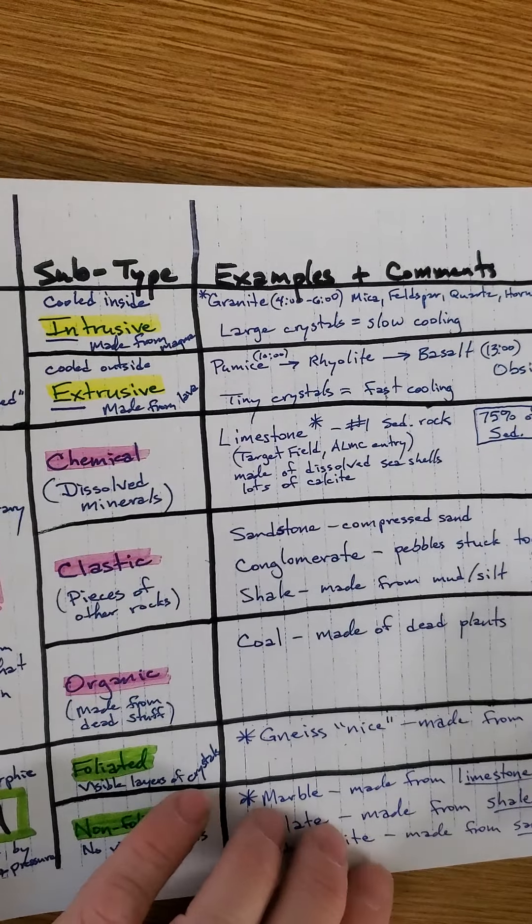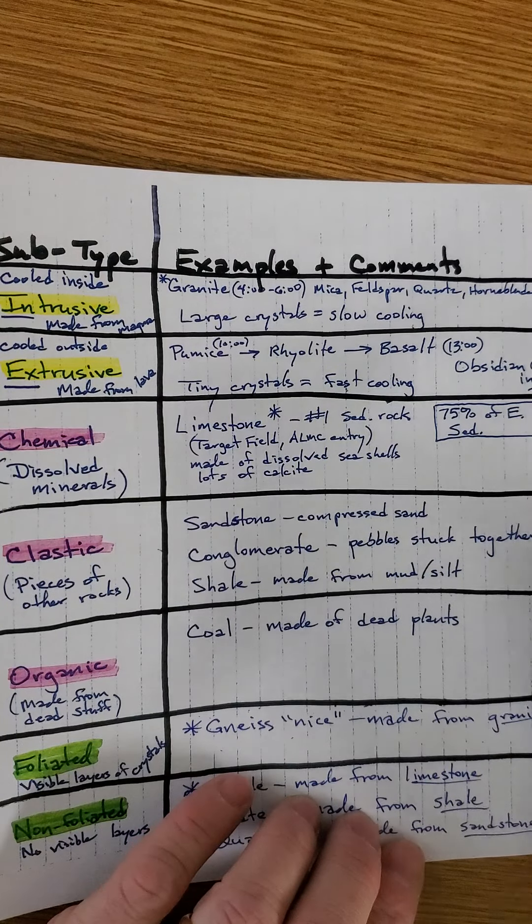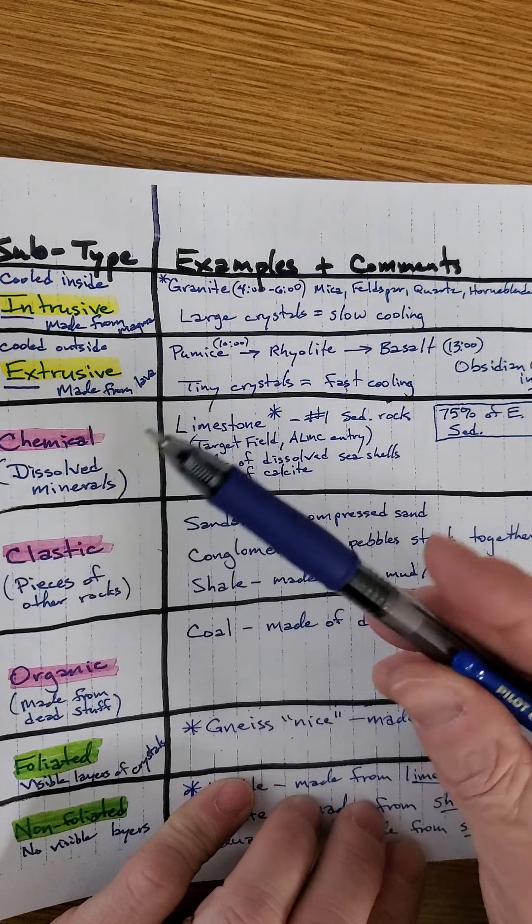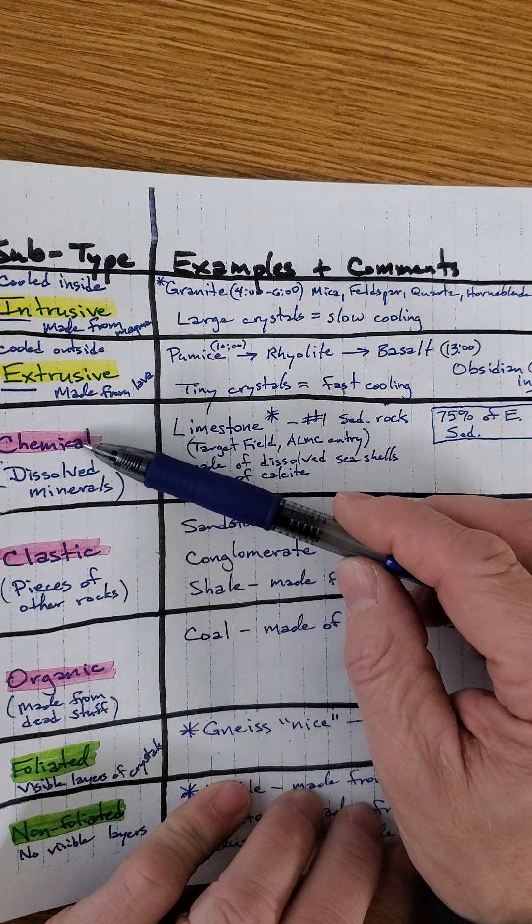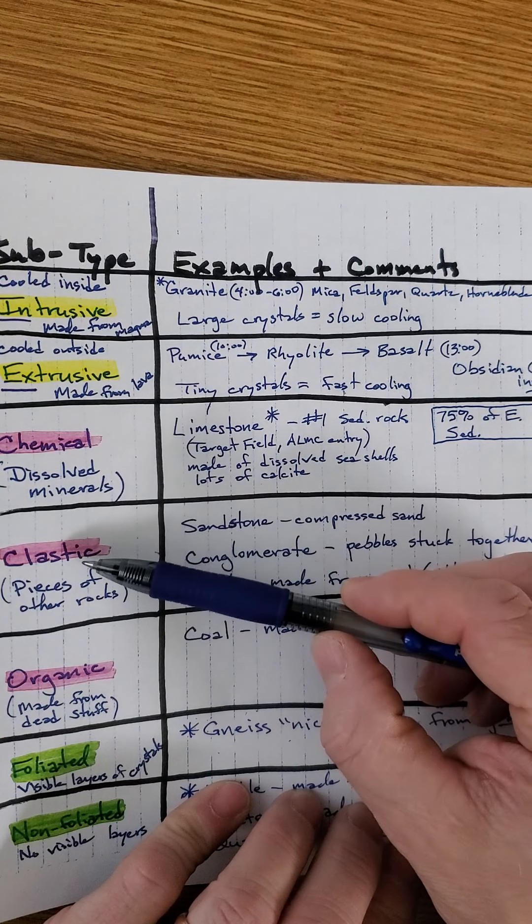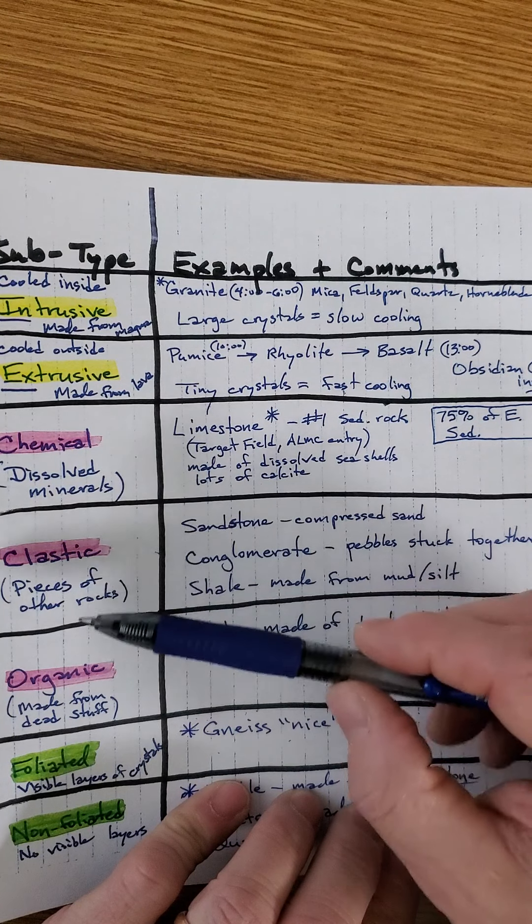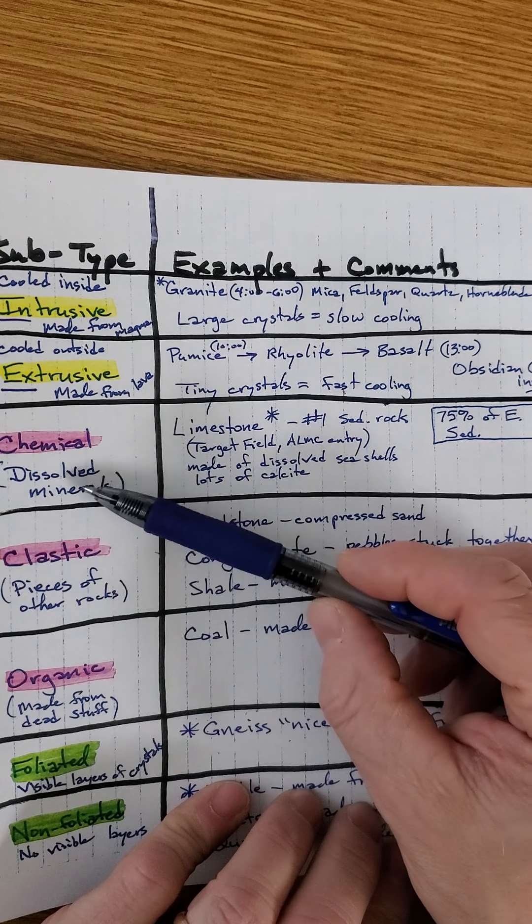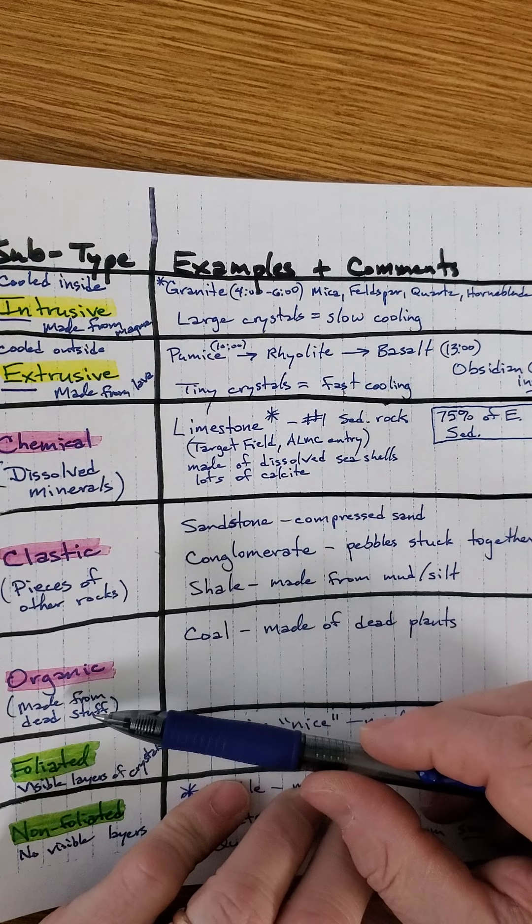Sedimentary rock, stuff that settles out of water, or milk. Stuff that settles out of liquids. And there were three types. Chemical sedimentary rock, where it's dissolved minerals, or clastic sedimentary rock, pieces of rocks, and organic, dead stuff. So minerals that settle out of water, chunks of rock that settle out of water, dead stuff that settles out of water.